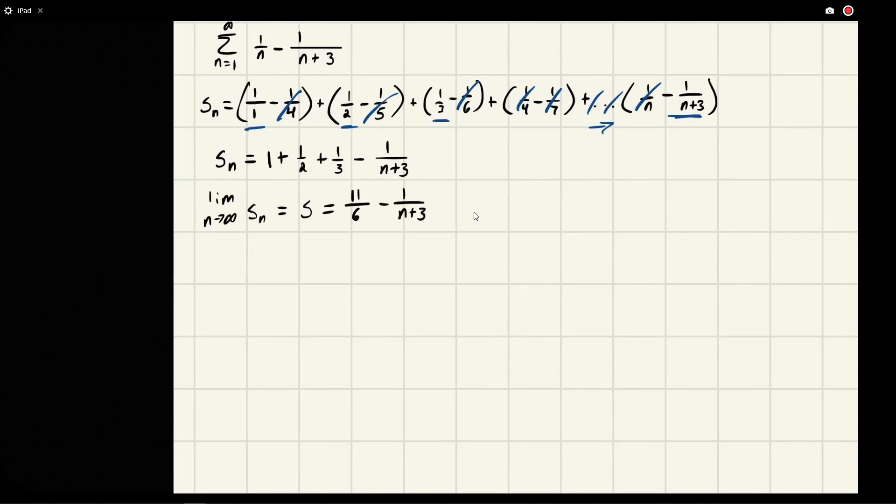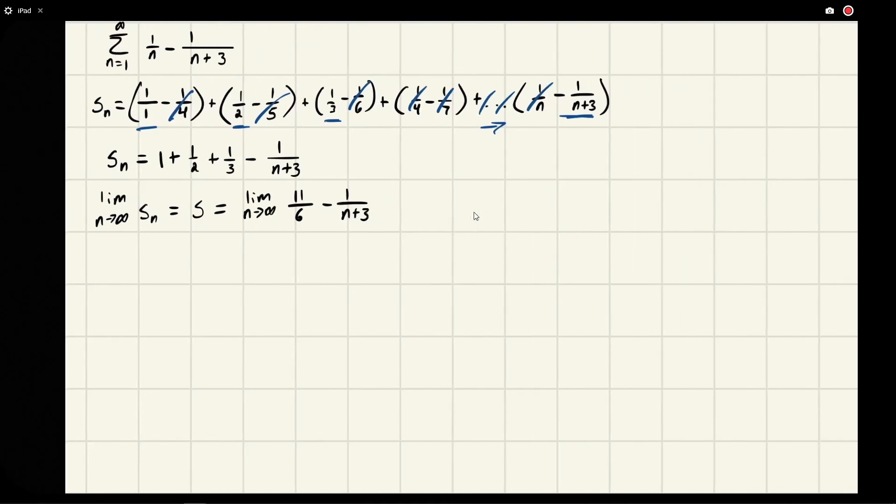And here, if we, let's just go ahead and look at this for a second. If we divide everything by n, or actually we don't even need to, that's overcomplicating it. This is going to become infinity on the bottom.